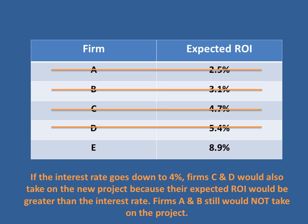Let's continue and lower the interest rate to 4%. Now firms C and D are going to take on the new project. Firms A and B still would not take on the project because that interest rate of 4% is still above their expected returns of 2.5% and 3.1%.